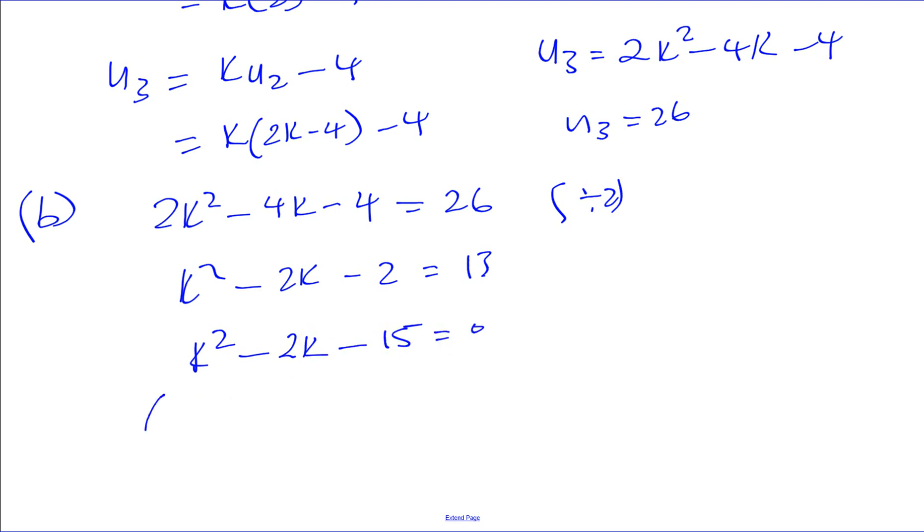And then we can factorize this. So we have k, and we're going to have one positive and one negative in the brackets. It's 5 times 3 is 15, and 5 and 3, the difference is 2. So it's going to be k minus 5 and k plus 3. Therefore, k is either minus 3 or k is 5.